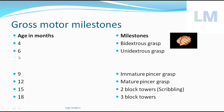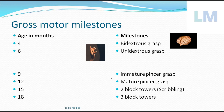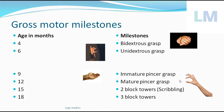At nine months, the child achieves immature pincer grasp. The pincer grasp means using the thumb in opposition to other fingers to catch hold of an object. At nine months it is not fully matured — the child uses the tips of the thumb and other fingers altogether. At twelve months it will become the mature pincer grasp.